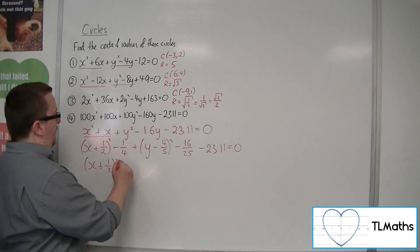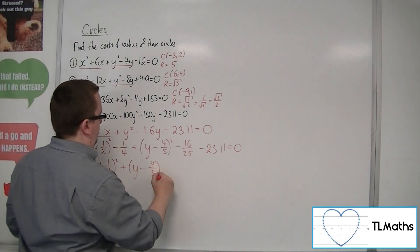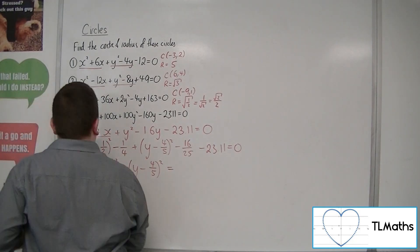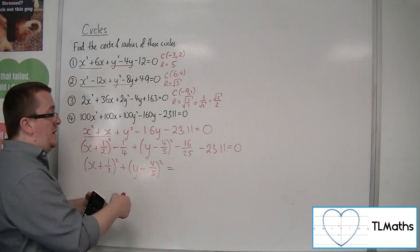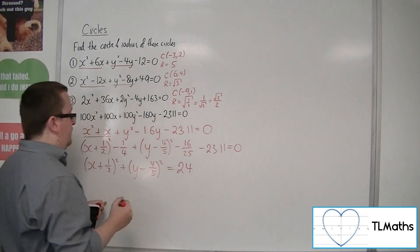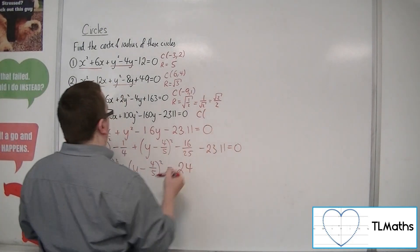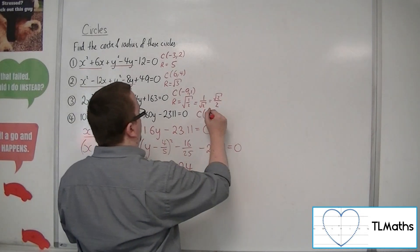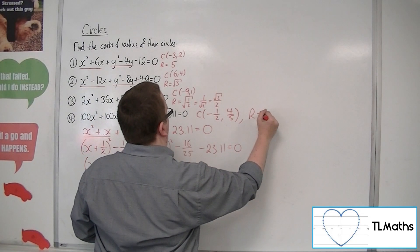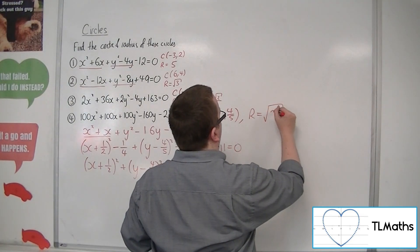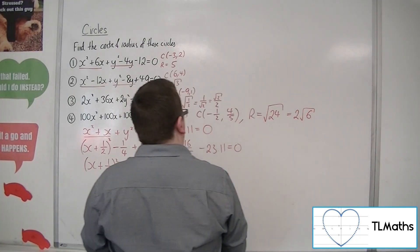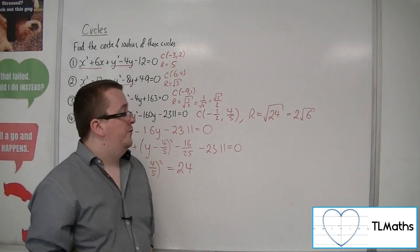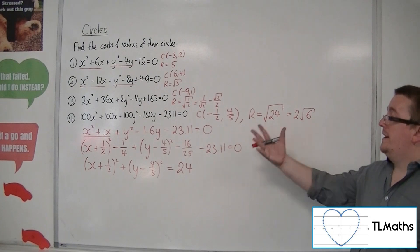So writing both brackets first, then I've got this minus 1 quarter, take away 16 over 25, take away 23.11. And that gets me minus 24. Add the 24 to both sides. So the centre for this last circle is minus 1 half, 4 fifths, and the radius is the square root of 24, which is 2 root 6. And that's how you can find the centre and radius of circles given in that format.